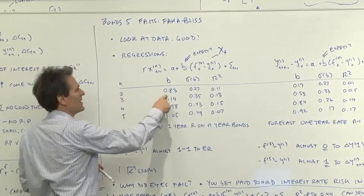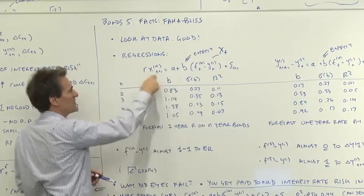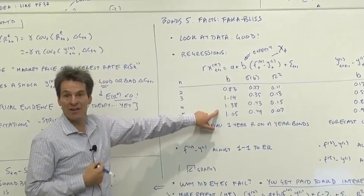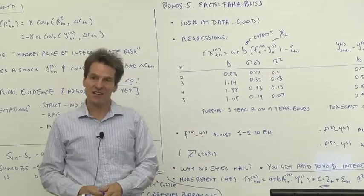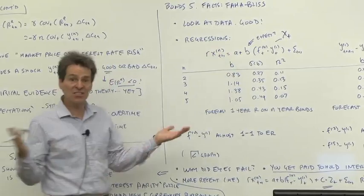The facts say the two-year, three-year, four-year, five-year forward rates are almost moving one to one with expected returns on their bonds next year. This number isn't zero. These numbers are close to one.